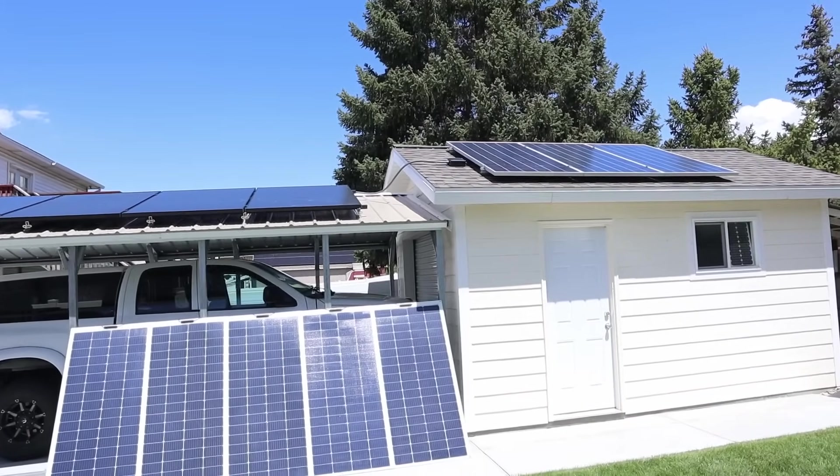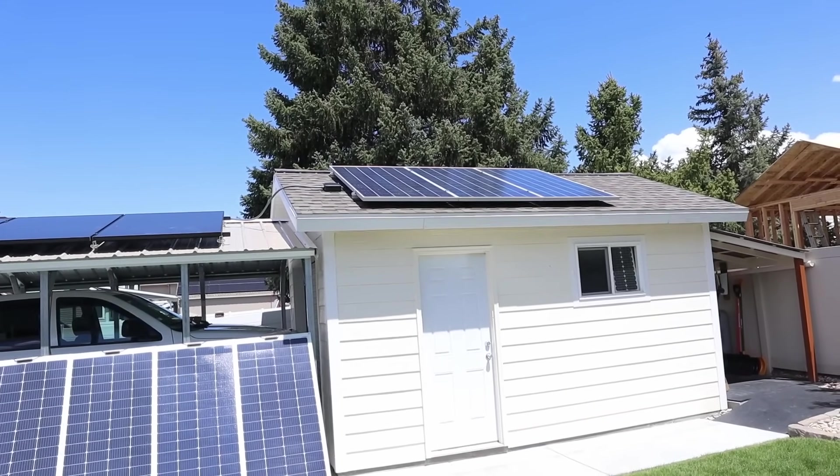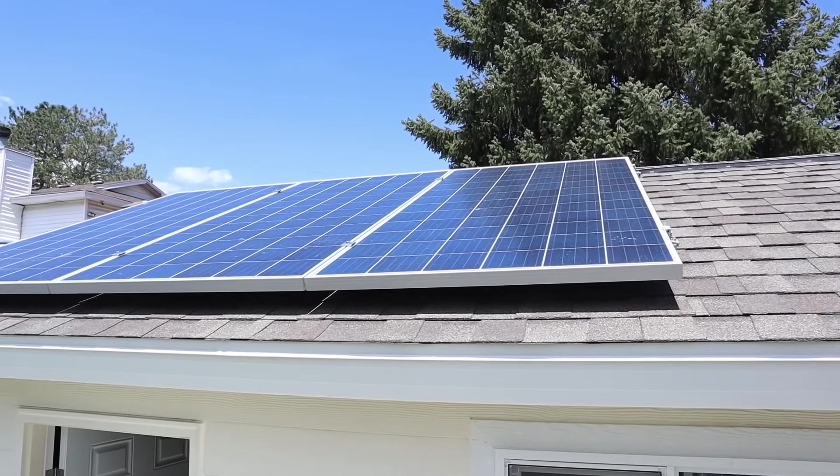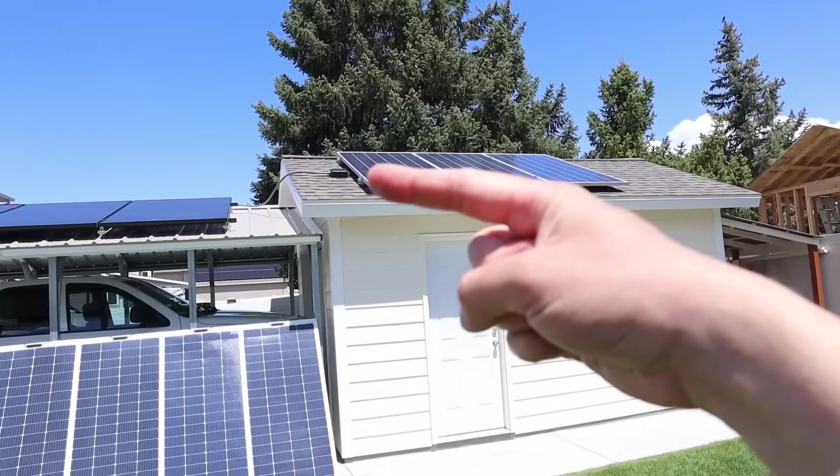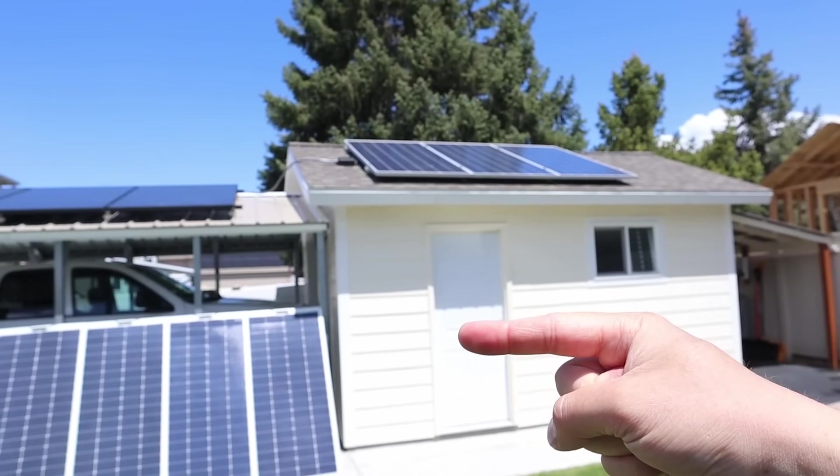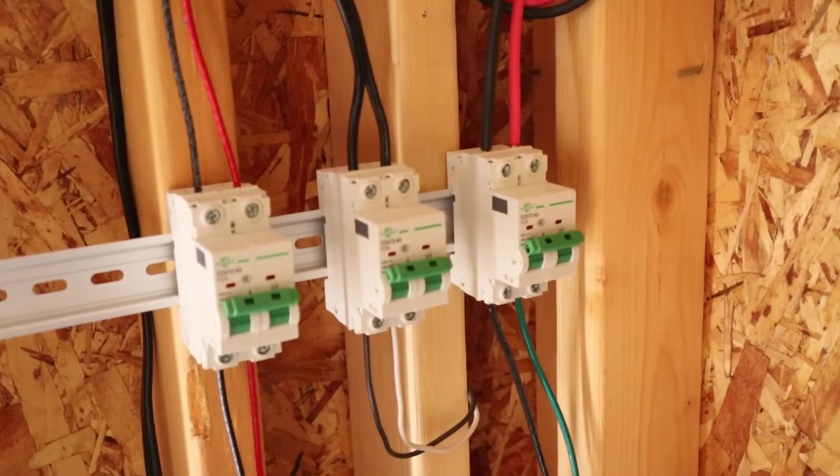The second solar array that I have connected in is this array on top of my shed. This is 975 watts. These are three 325 watt panels wired together in series. They both actually use the same roof access point, which they come down to the wall into some DC circuit breakers and then down under the ground back into my house.